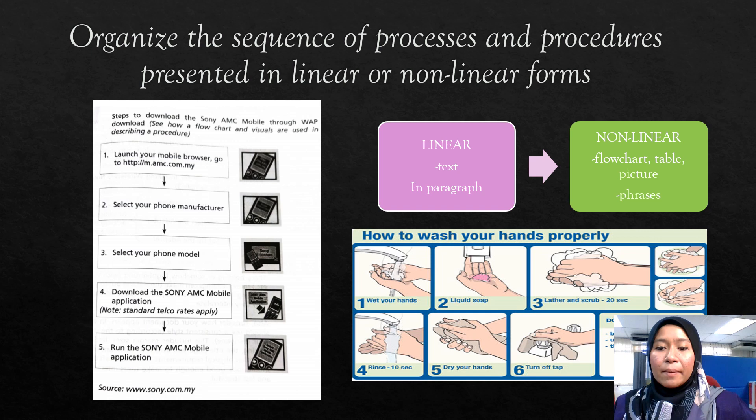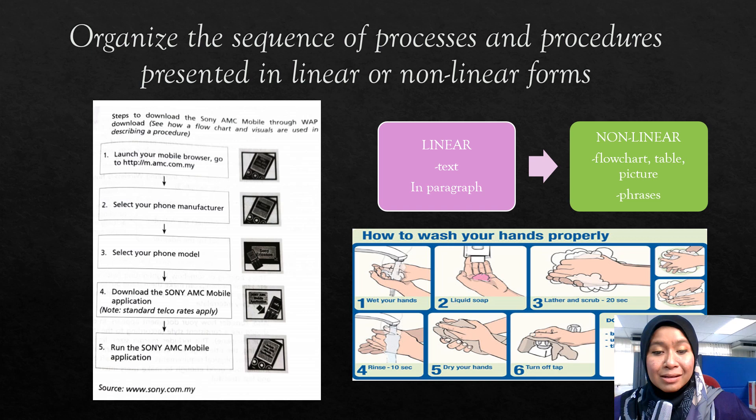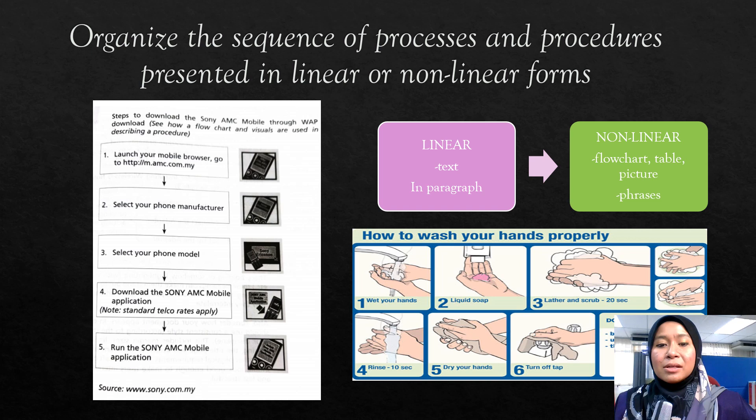Another example is how to wash your hands properly: number one, wet your hands; number two, apply liquid soap; number three, lather and scrub for 20 seconds; number four, rinse for 10 seconds; number five, dry your hands; and number six, turn off the tap. Again, this shows pictures of the procedure, making the process very clear so people understand it better. This is another way to present your process or procedures.